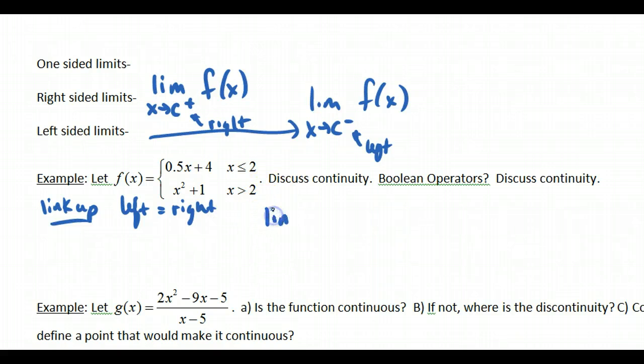Well, let's check this. So if I take the limit as x approaches 2 from the left, that would be under this case where x is less than or equal to 2. And I have 0.5x plus 4. Well, I can do a direct substitution. I can plug this in to find out where this function goes. And so this would be a value of 5.